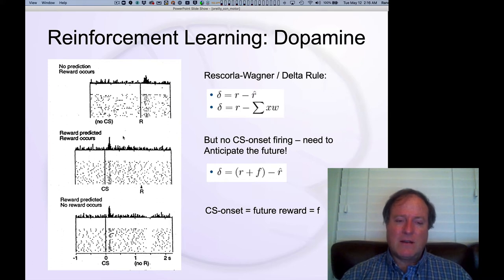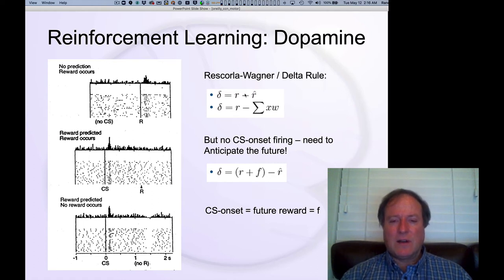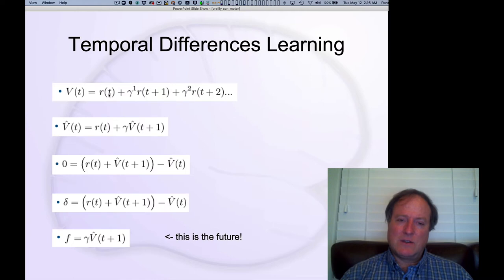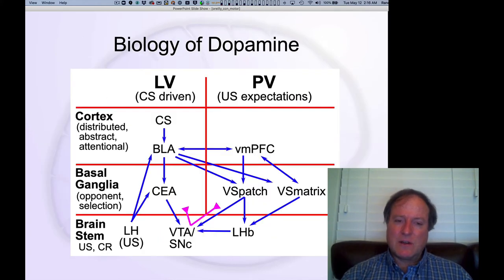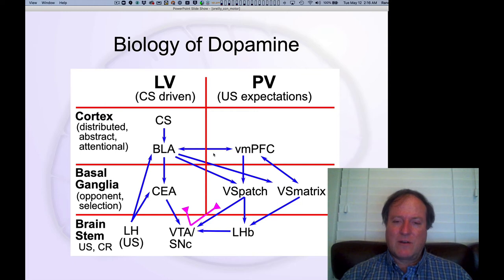It turns out in the brain that the burst you get at the time of the conditioned stimulus can actually be quite independent of whether or not you get a burst at the time of the reward, and there are various other indications that the neural mechanisms supporting these two systems are actually separable. We think it's more like the Rescorla-Wagner learning rule, which describes events at the time of reward, and then a separate learning system that happens at the time of the conditioned stimulus. We call the conditioned stimulus learning the learned value (LV) and the learning at the time of reward the primary value (PV) — together spelled PVLV, a nice pun on the Pavlov learning algorithm.